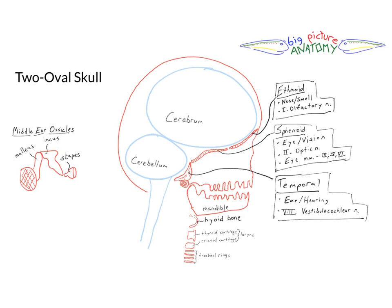We're taking a look at a very simple cartoon-like view, a sagittal view of the skull, and I call it the two oval skull because we start out with a look at the brain inside the skull represented by two ovals: a big oval representing the cerebrum.